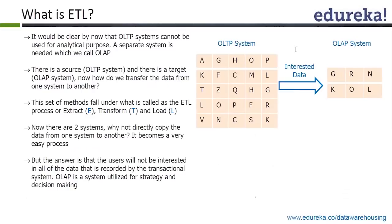Your OLAP system, which is your reporting system, might not need data at a detail level but probably at an aggregated level — important highlights. You might want to do reporting on only certain data from your OLTP system, not all of it. So you use ETL to get the data from that detailed OLTP system and bring it into the format you want in the OLAP system. This process is called ETL — you extract the data from your OLTP system, transform it into the format you want, and then load it into your OLAP system.